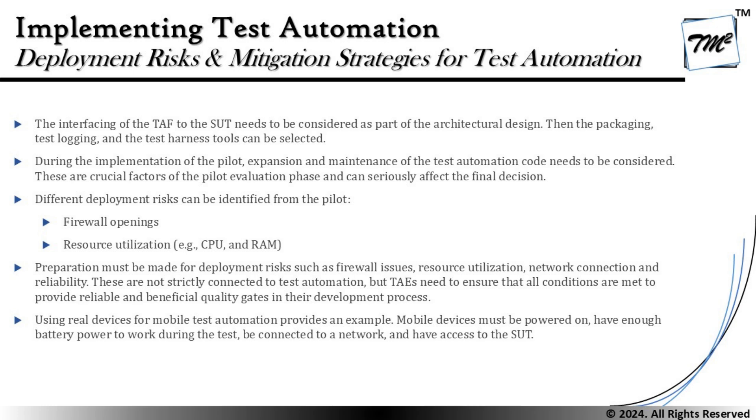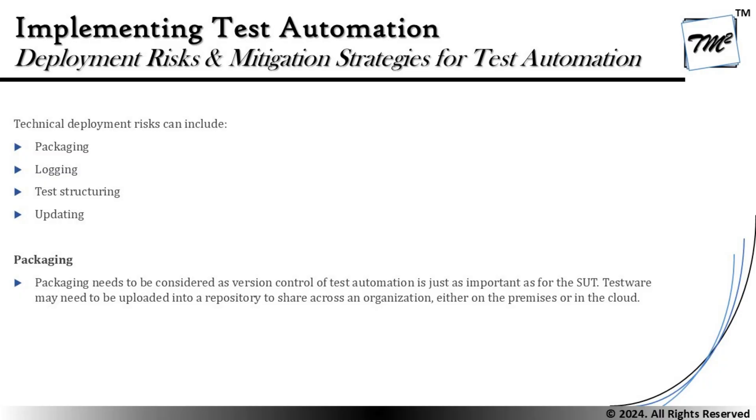Not all SUTs are simple desktop or web-based applications — sometimes applications are hosted on external devices or equipment requiring multiple other protocols to be considered, such as having sufficient power and being connected to a network for making calls, sending SMS, or utilizing a data source. The next area covers examples of technical deployment risks, and here we include four of them: number one is packaging, second is logging, third is test structuring, and fourth is updating.